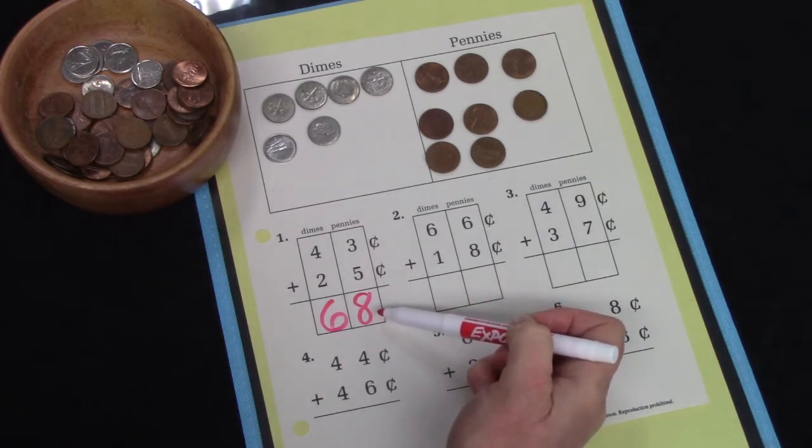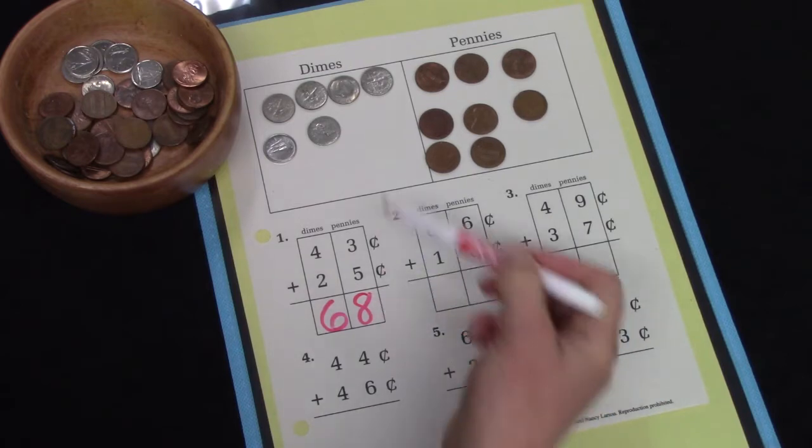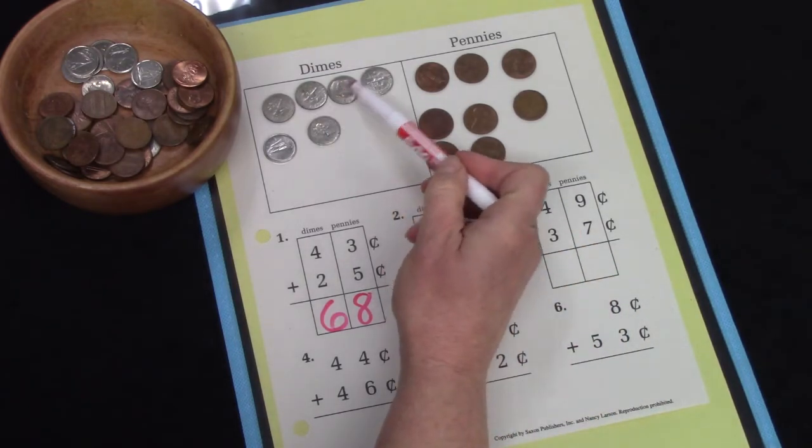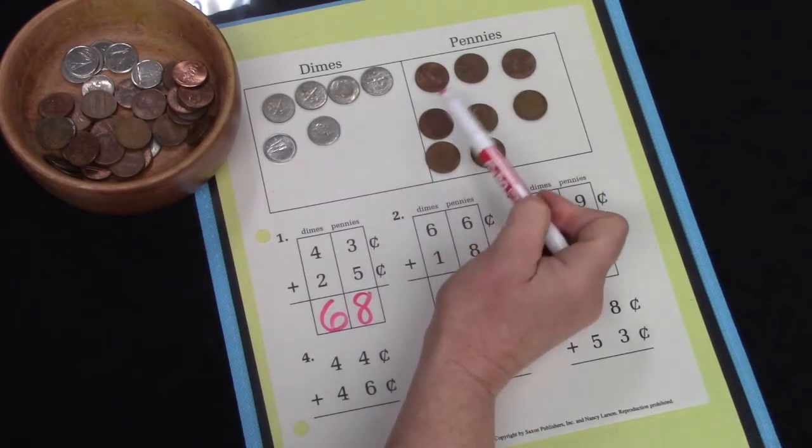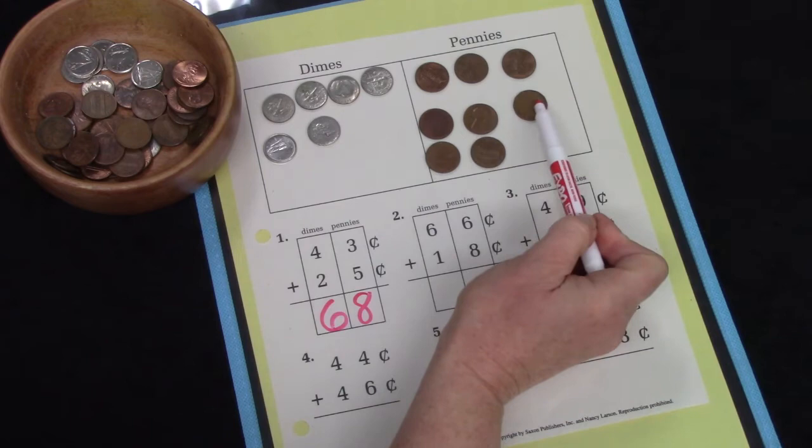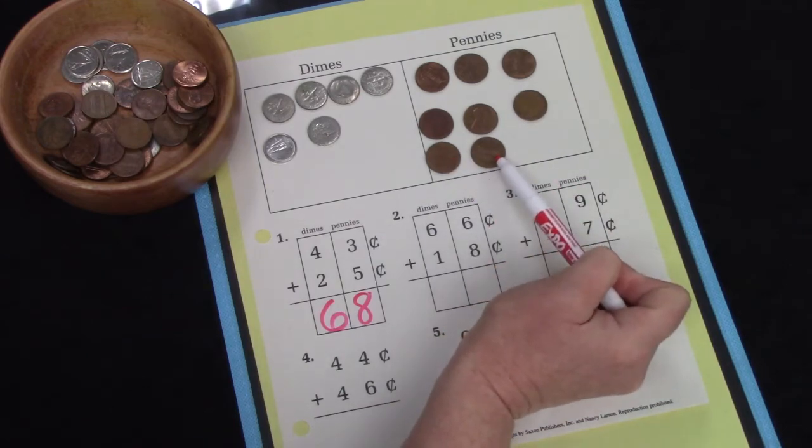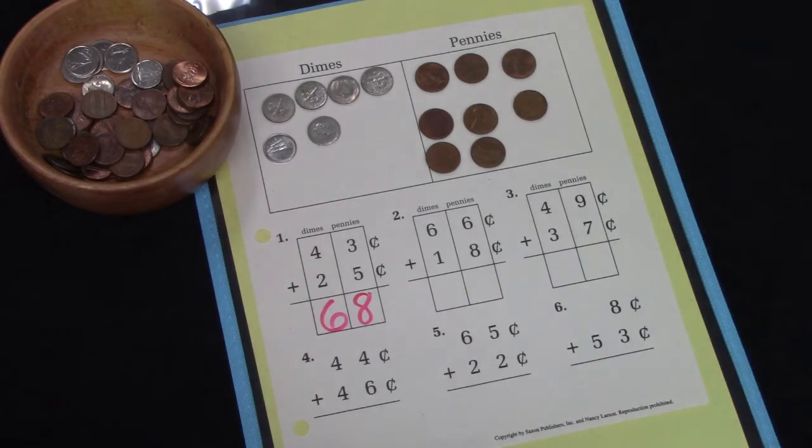Well let's count our cents. 10, 20, 30, 40, 50, 60, 61, 62, 63, 64, 65, 66, 67, 68. Well done. Let's try another question.